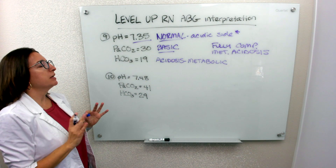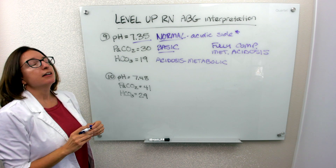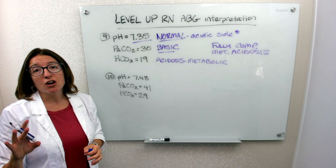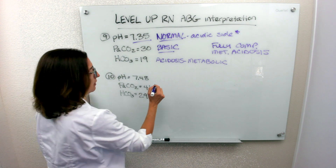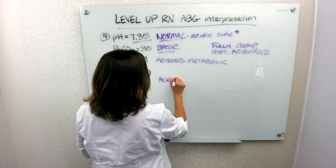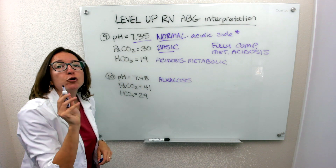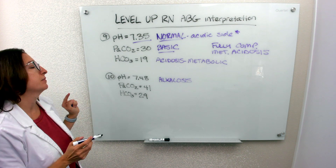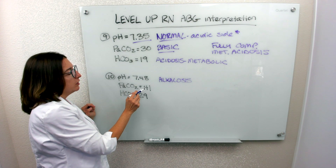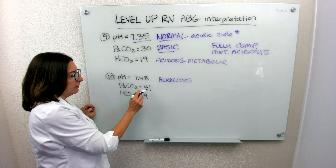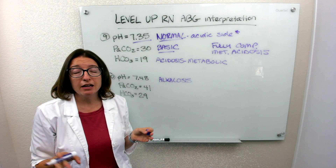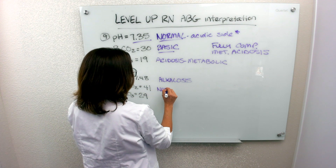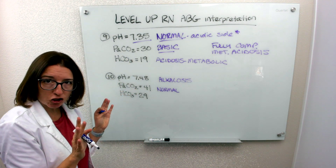Number 10. We have a pH of 7.48. Our normal range is 7.35 to 7.45. It is out of range on the high side, so we have alkalosis here. Now we need to see who's to blame for this alkalosis — is it the respiratory system or the metabolic system? With the respiratory system, we have a PaCO2 value of 41, which is within the normal range of 35 to 45. So the respiratory system is normal — it's not acting up or doing anything.